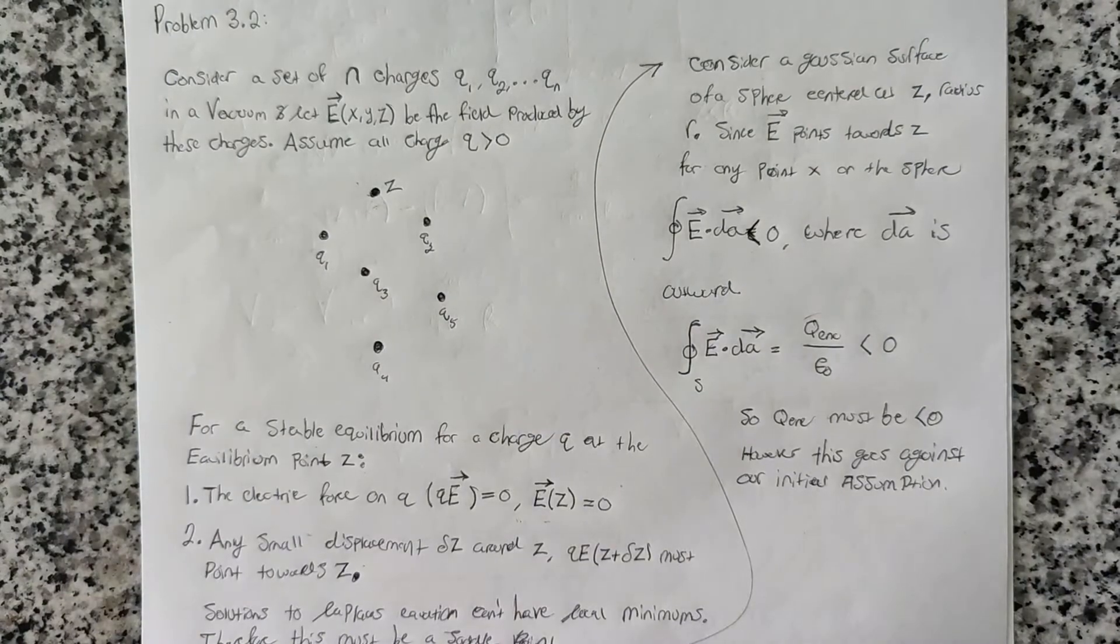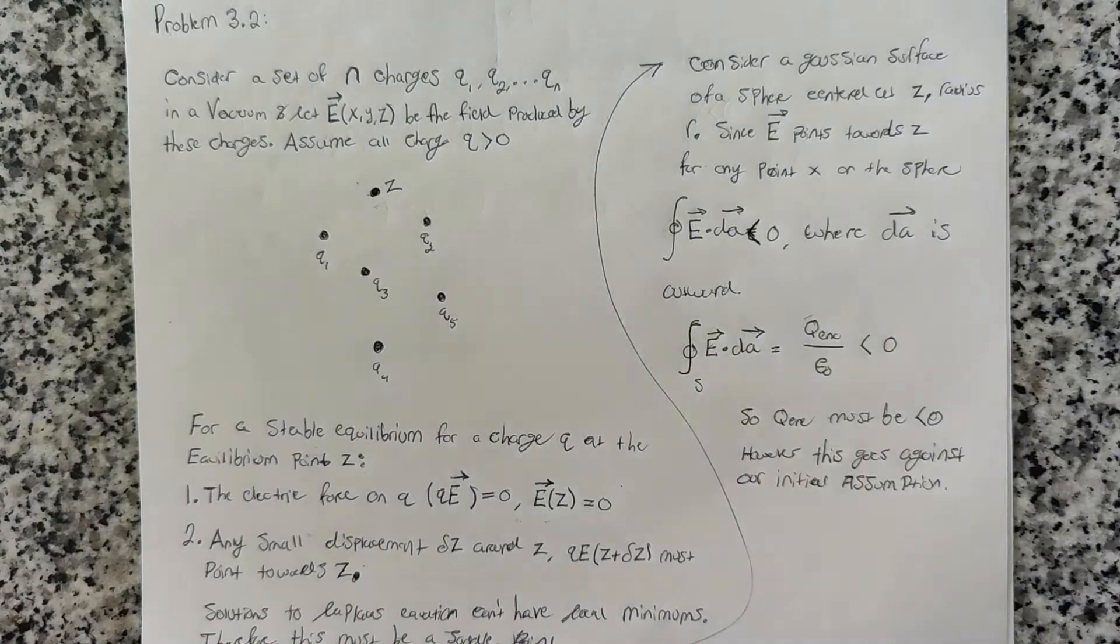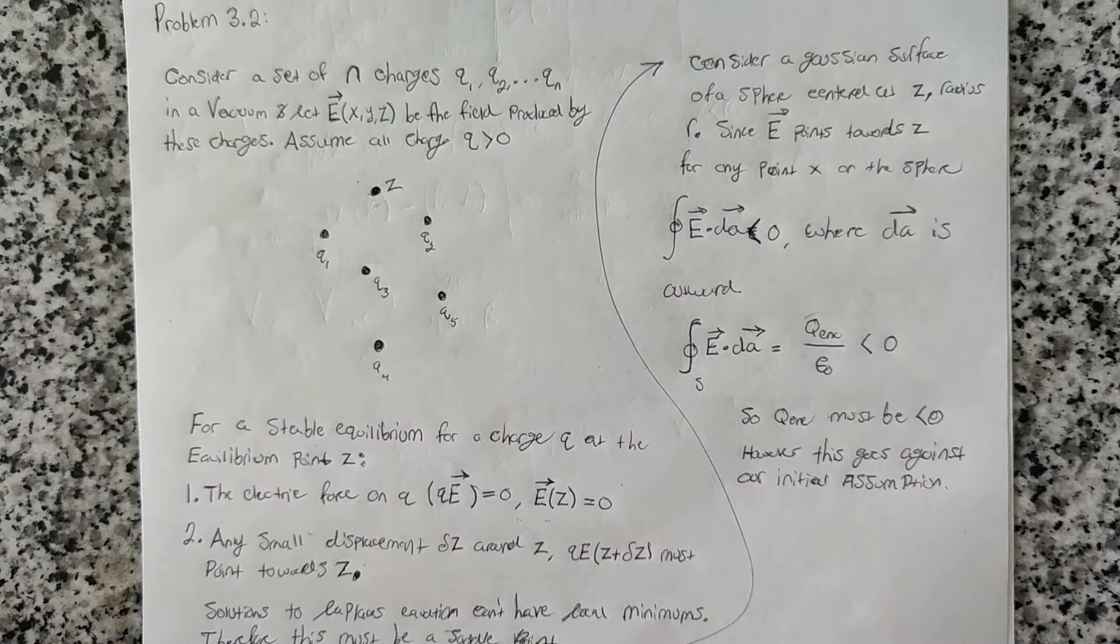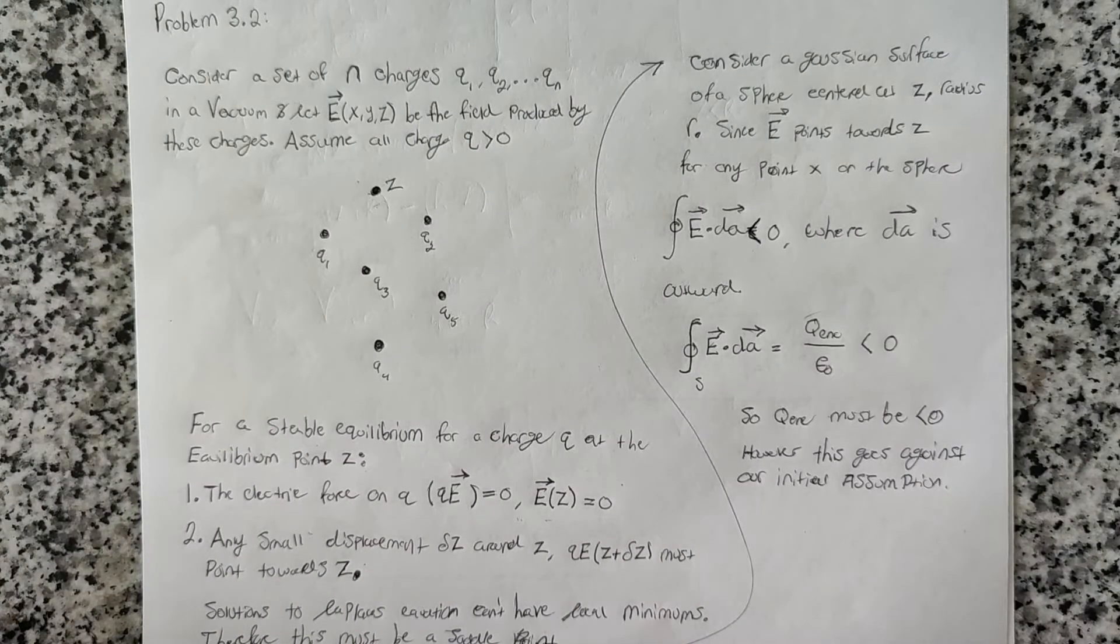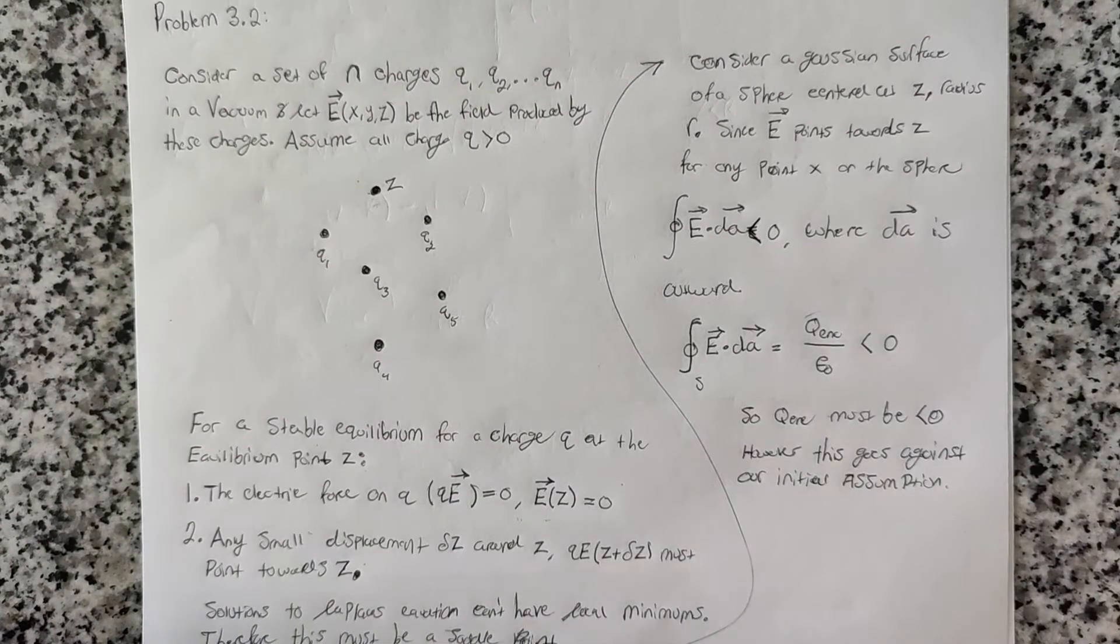Basically, the whole first couple pages of Chapter 3 goes over Laplace's equations in one, two, and three dimensions. It talks about how the potential for the solutions to Laplace's equation can't have local maxima or local minima. So all the extreme values of the potential occur at the boundaries.